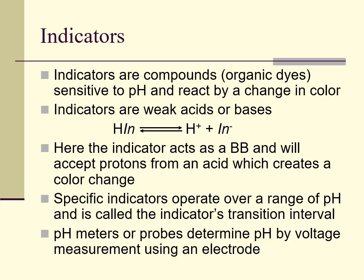It can reflect that with a color change that is very visual to us. In this particular example, the indicator is acting as a Brønsted base and will be able to accept protons from any acid, which would create a color change as the indicator accepts and then goes backwards. Specific indicators can operate over a range of pHs, simply called the indicator's transition interval, because each one has its own unique function.